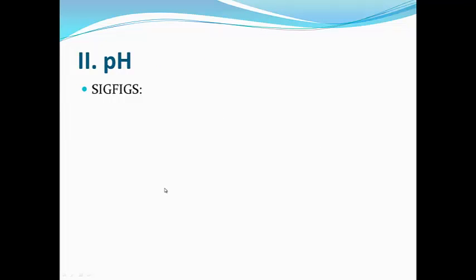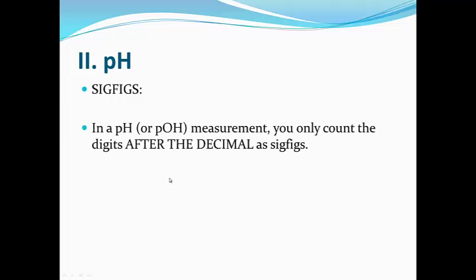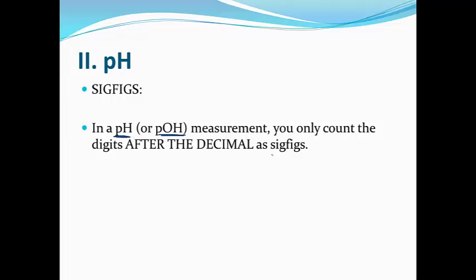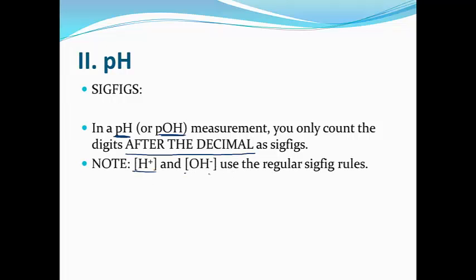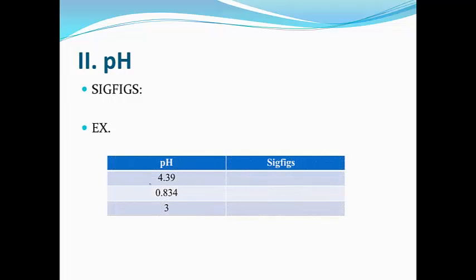For sig figs in pH and pOH, the rule is different: you don't count the numbers in front of the decimal — you only count how many digits you have after the decimal. For H-plus and OH-minus, the normal sig fig rules apply. So with pH, only the decimal places count as sig figs. If you write a pH with no decimal places, there are no sig figs to it — so don't leave an answer as a whole number if that's what you calculated.